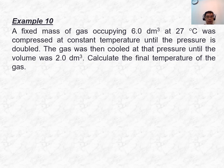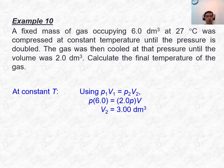Example 10 has two parts. The first part involves a fixed mass of gas at constant temperature, so apply Boyle's Law. Using P₁V₁ = P₂V₂ and substituting correctly, V₂ should be 3.00 m³.